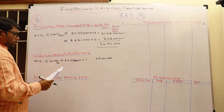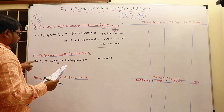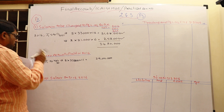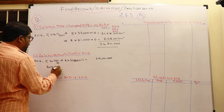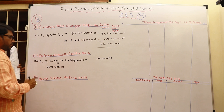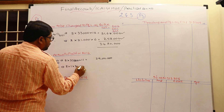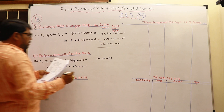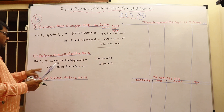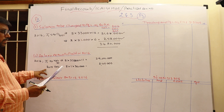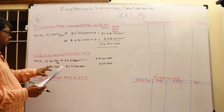That gives ₹29,04,000 actually paid during this year for 2016 salaries. Additionally, December 2015 salary was paid during this year in January 2016: 8 employees × 1 month × ₹30,000 = ₹2,40,000. So ₹2,40,000 was paid in January 2016 as the outstanding December 2015 salary.